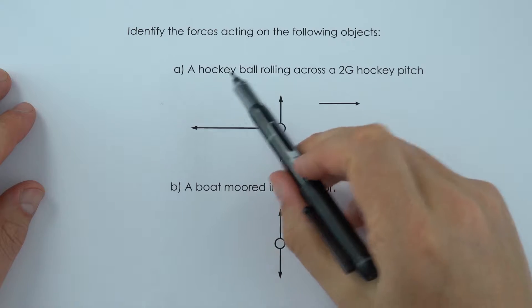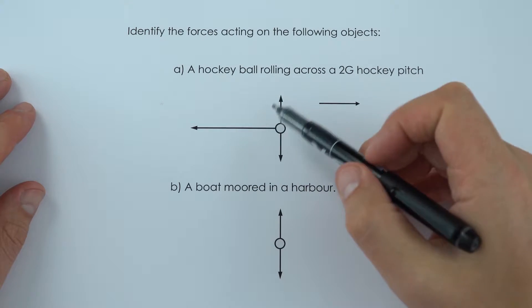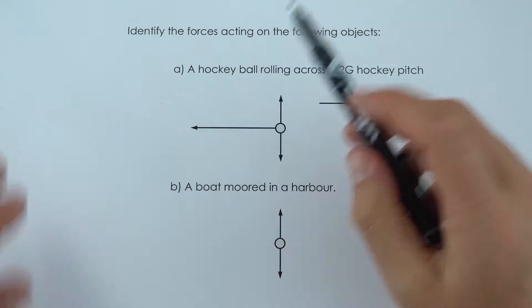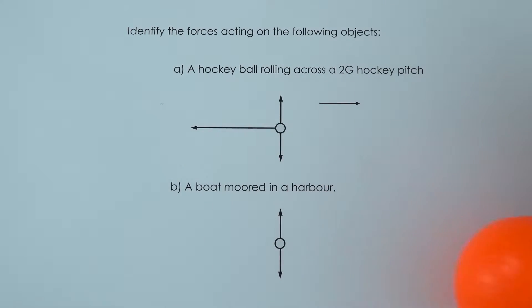In this example we're just going to identify some of the forces, so that means labelling what type of forces are acting on certain objects. The first one we have a hockey ball which is rolling across a 2G hockey pitch.